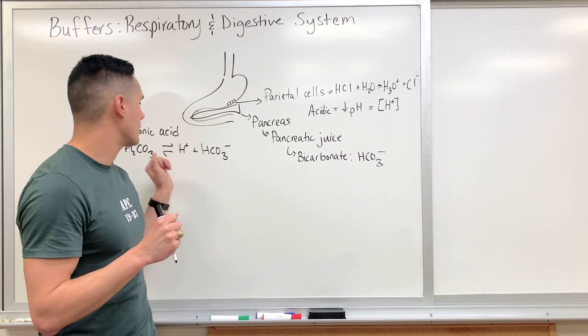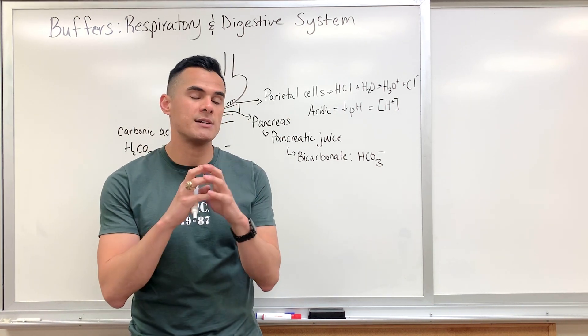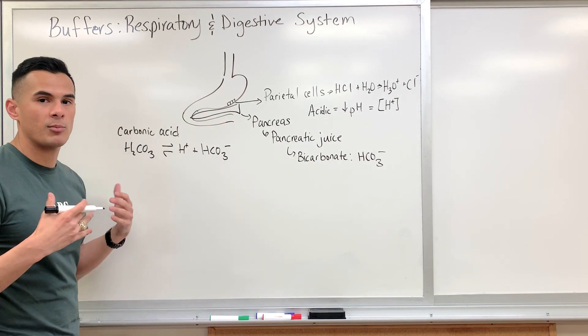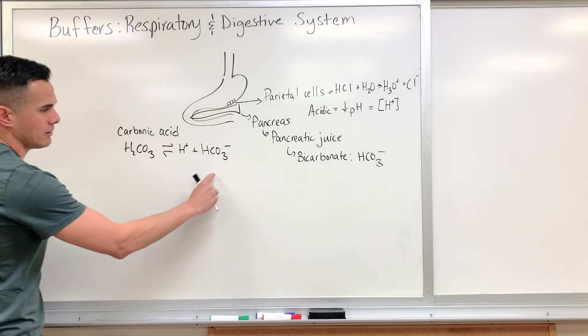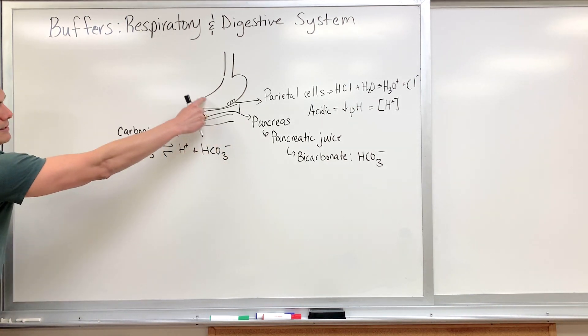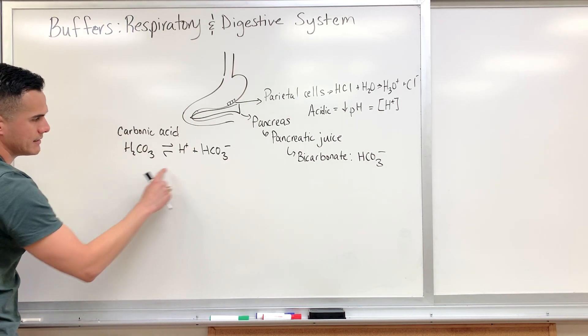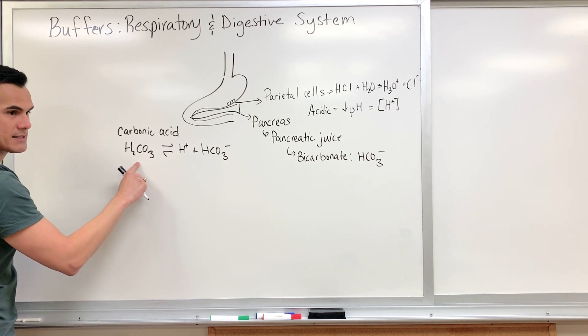Compared to carbonic acid, not all of those protons get plucked off. So this is how we can help regulate the pH. Therefore, when the acid gets here into the duodenum, the bicarbonate ion is going to form with this proton and form carbonic acid.